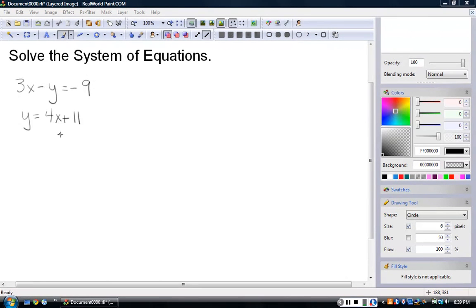In order to do that, we're going to talk about two methods. One is the elimination method and one is the substitution method. We're going to start with the substitution method. So if I have 3x minus y equals negative 9 and y equals 4x plus 11, remember these y's are the same y. So what I can do is literally substitute this into this, one piece of the equation into the other.